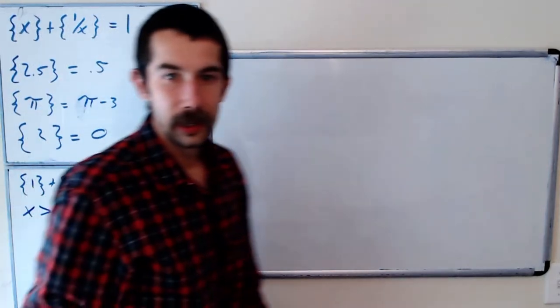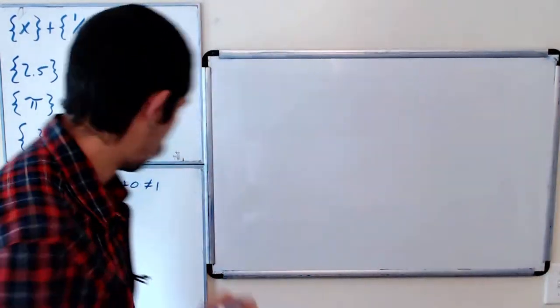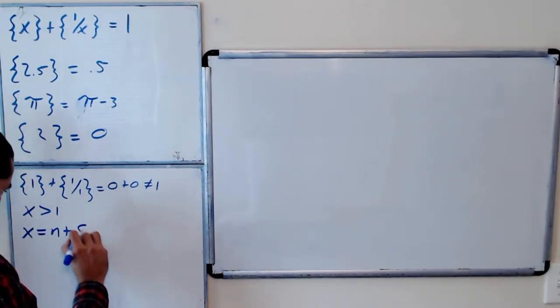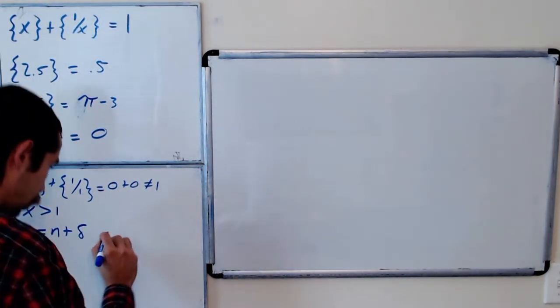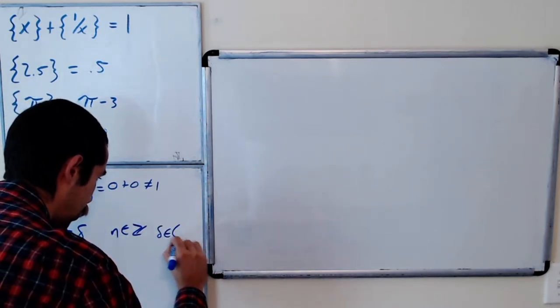Okay and so we could write x as an integer n plus a decimal delta. So n is in Z and then delta is in the interval 0 to 1.